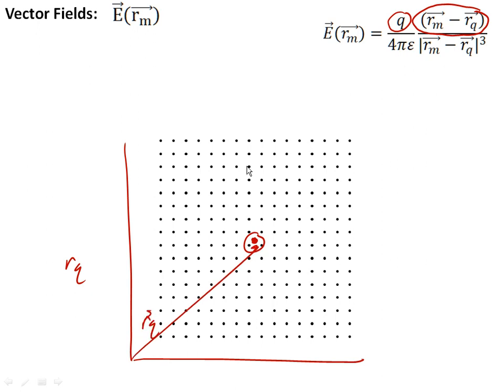We know the electric field at some point R sub M is proportional to the difference between these vectors, divided by the magnitude, the length of those vectors cubed.